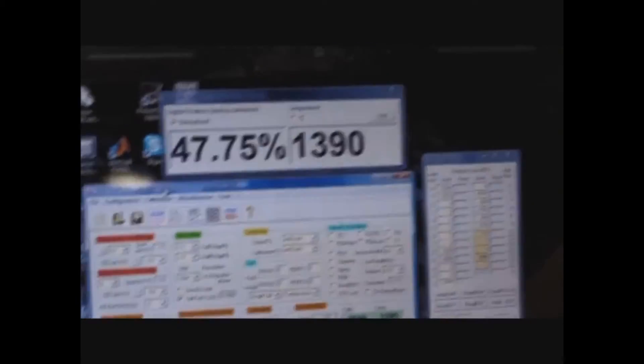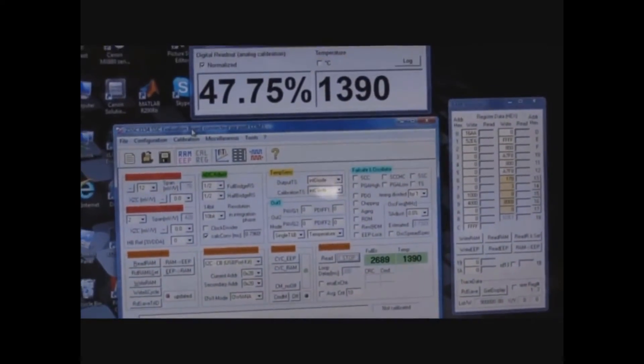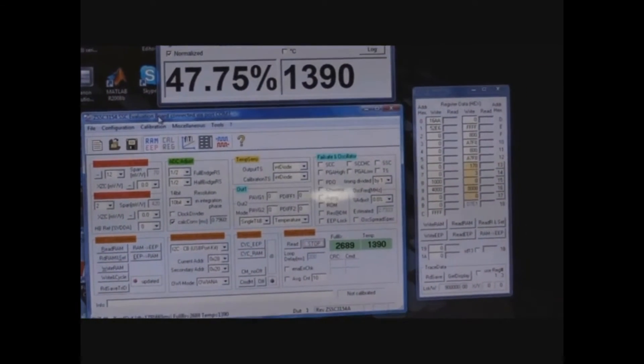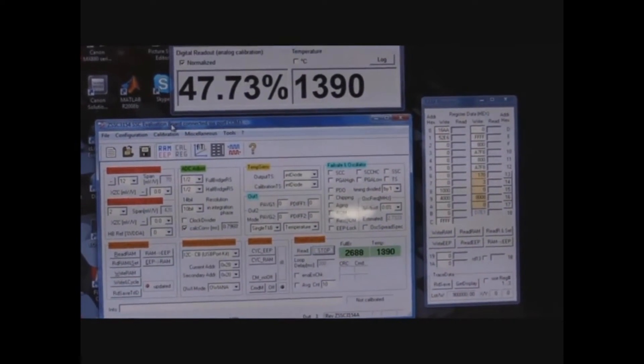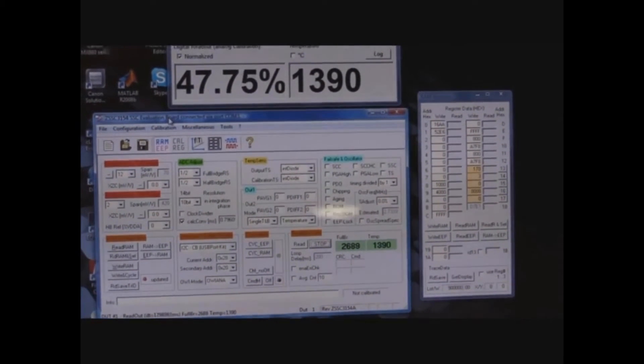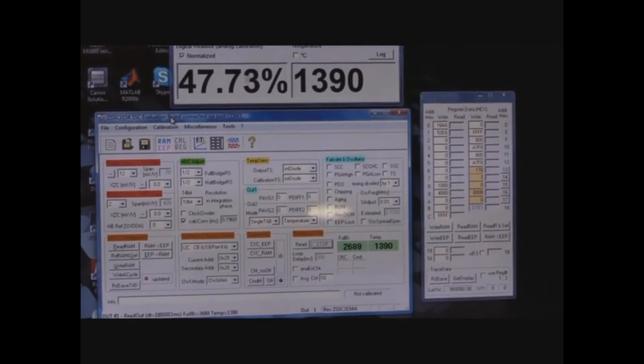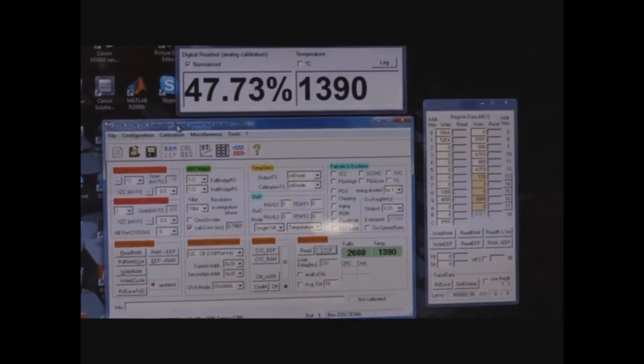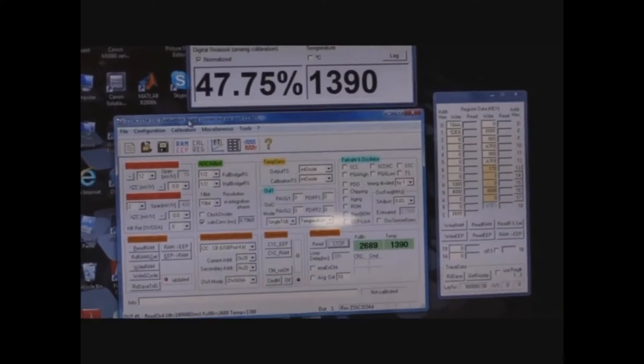Then on the screen, you can see one of our basic GUIs. Most of our software interfaces look this way. It really helps customers to become familiar with the part quickly and to learn how to configure it. And once you have it configured the way that you need it to do all your calibration, you can store the values into the EEPROM and then it's completely configured permanently.